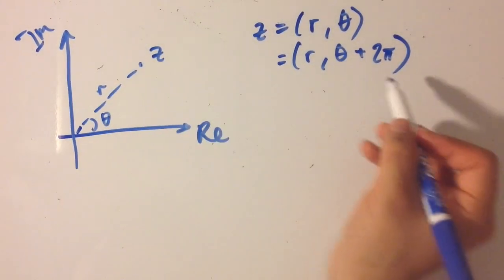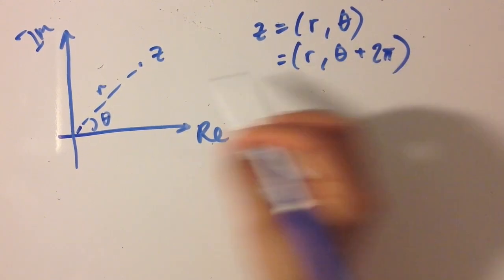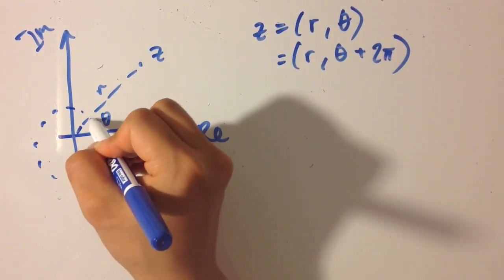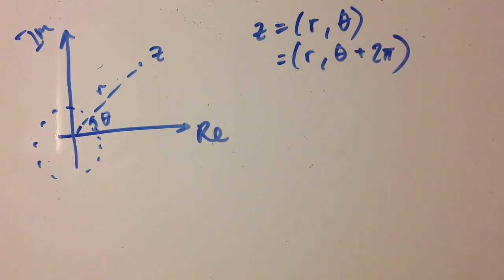That's because when we add any multiple of 2 pi we just circle around and come back to exactly the same point we were at.